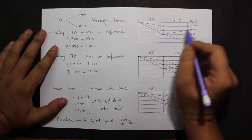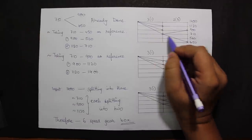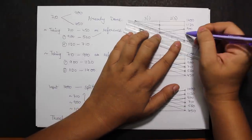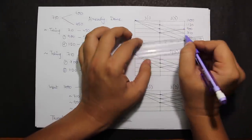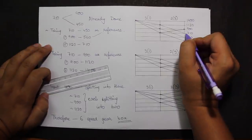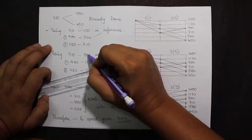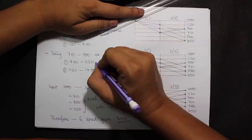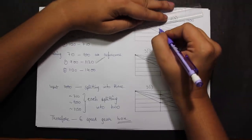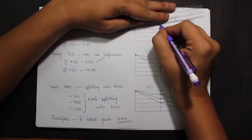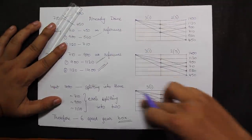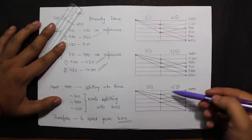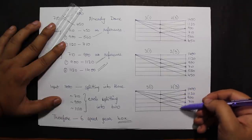Next, the combinations are made. Using reference line 710–450, the combinations drawn are 900→560 and 1120→710. Taking reference line 710–900, the next combinations are 900→1120 and 1120→1400. Looking at the final ray diagram, input 1400 splits into three lines, and each of those splits into two, giving 3×2 = 6 speeds — confirming the 6-speed gearbox.